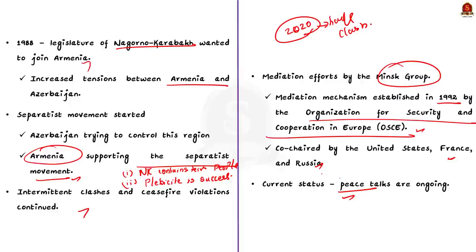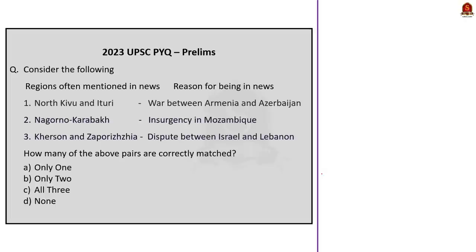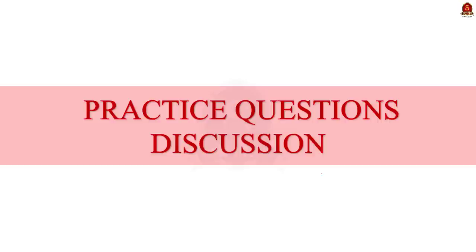The current status is that peace talks are ongoing, with the situation remaining tense with gunfire along borders. Azerbaijan and Armenia should make sincere efforts toward a peaceful settlement. This concludes our news article discussion session. Now, let us take up the practice prelims questions.